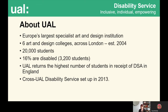To give you some context about UAL, we're Europe's largest specialist art and design institution. A mix of six art and design colleges across London came together and were formally established as University of the Arts London in around 2004. We have 20,000 students in total and 16% of our students are disabled — that's about 3,200 students. UAL returns the highest number of students in receipt of disabled students allowances in England.